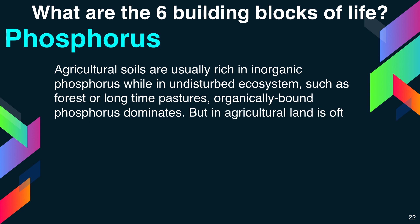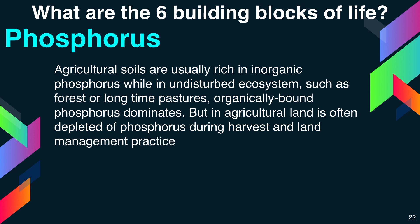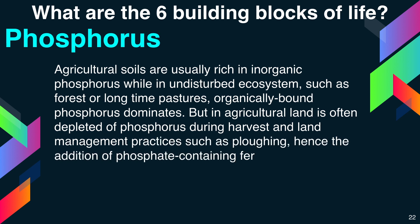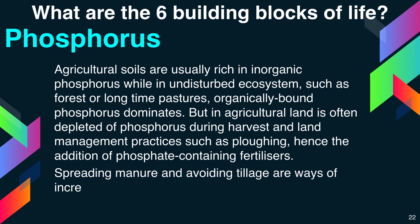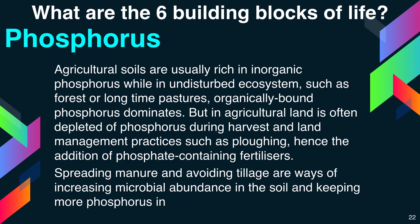Agricultural land is often depleted of phosphorus during harvest and land-managing practices such as tilling. In addition to phospholipids, inorganic fertilization is often required. Spreading manure and avoiding tillage are ways of increasing microbial abundance in the soil and keeping more phosphorus in organically bound form.